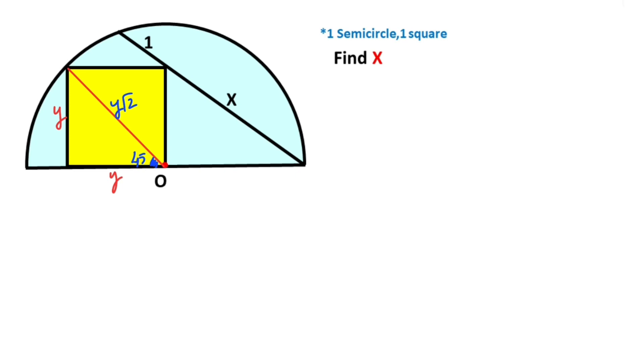If you notice, this red line is also the radius of this semicircle. Therefore, here this length is y√2 as well.